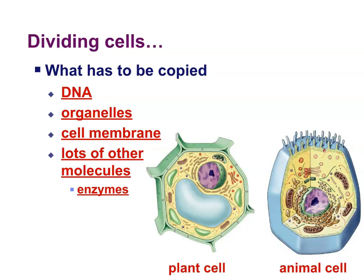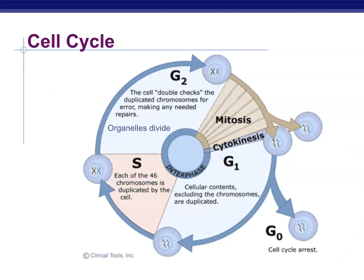Now, if a cell is going to divide, we've got to think about what it actually needs to copy. DNA is going to be one of the major things that needs to be copied, because DNA is the instructions for making all of the proteins and other things you're going to need for a functional cell. You're also going to need some organelles, cell membrane, and some enzymes to be functional right at the beginning. So before a cell starts dividing, it needs to make sure that it has all of the things necessary to be viable.